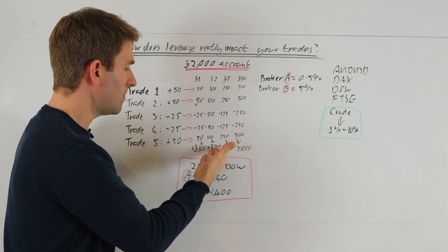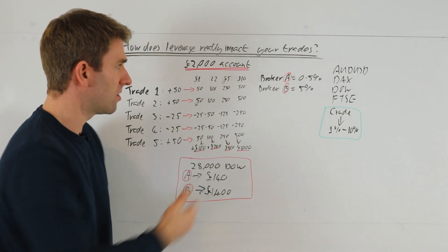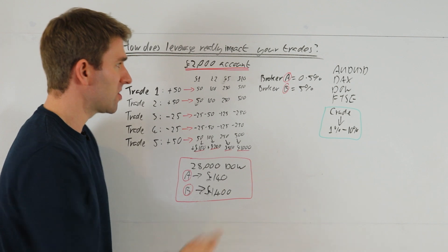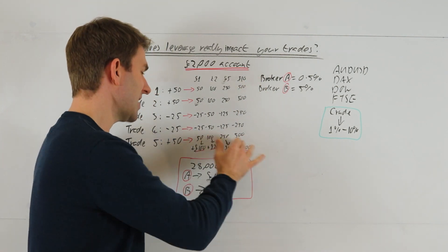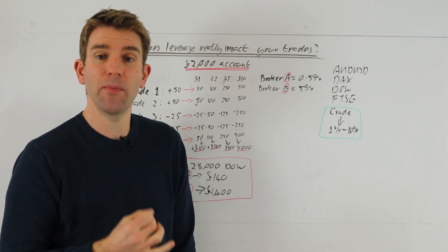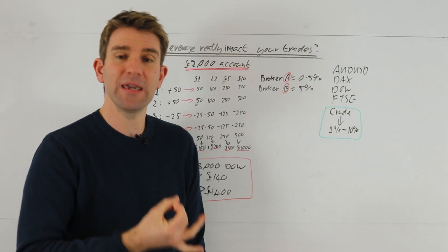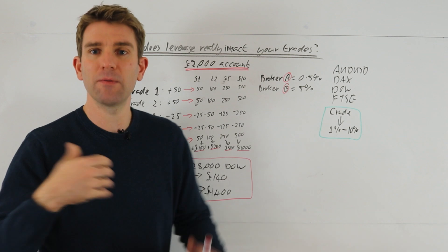We've got the total. If we do £2 a point, is obviously double, £200 profit. £5 a point, £500 profit. And £10 a point, £1,000 profit. So we're making ten times the amount. Obviously we are, but we have the ability to make ten times the amount. Of course we have the ability to lose it, but look at the difference.